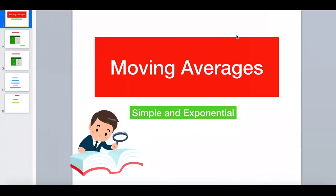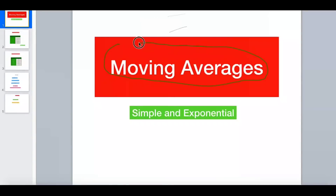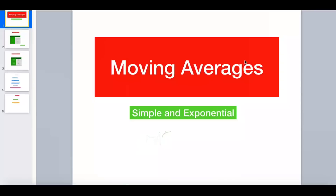Today's topic is going to be regarding a technical analysis concept — a technical indicator. The indicator name is moving averages. You would have heard of moving averages many times: simple moving average, exponential moving average, SMA, EMA. You would have seen many traders using these. Today we will discuss so that beginners will understand the basic meaning, and let's try to see some practical examples of simple and exponential moving average, as these are the most used among all other moving averages.